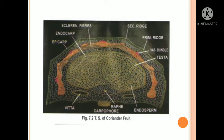In this way, we are taking the section of Coriander. After taking the transparent section, stain, mount, and observe under the microscope. This covers the cutting technique, staining technique, and mounting technique for Coriander. Thank you.